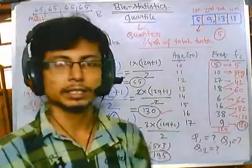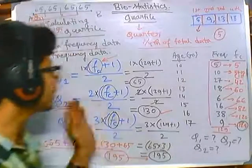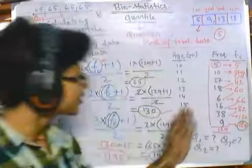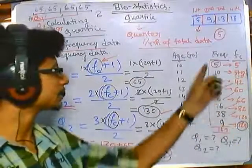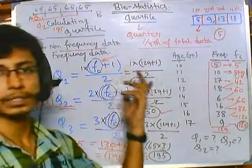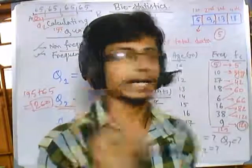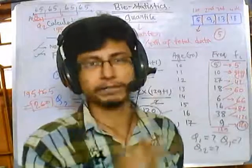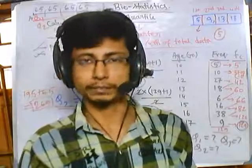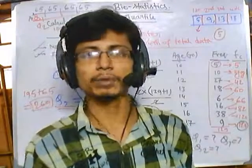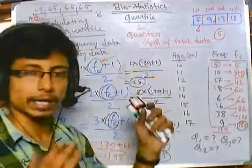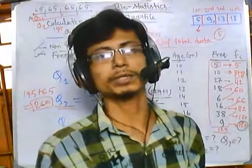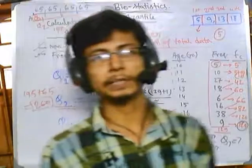These are the ways of getting quartile values for both non-frequency and frequency data. You can also get quartile values from a cumulative frequency graph called an Ogive graph. In the next video, we will talk about what an Ogive graph is, how to derive cumulative frequencies, how to plot the Ogive curve, and how to get quartile values by extrapolating the cumulative Ogive graph.